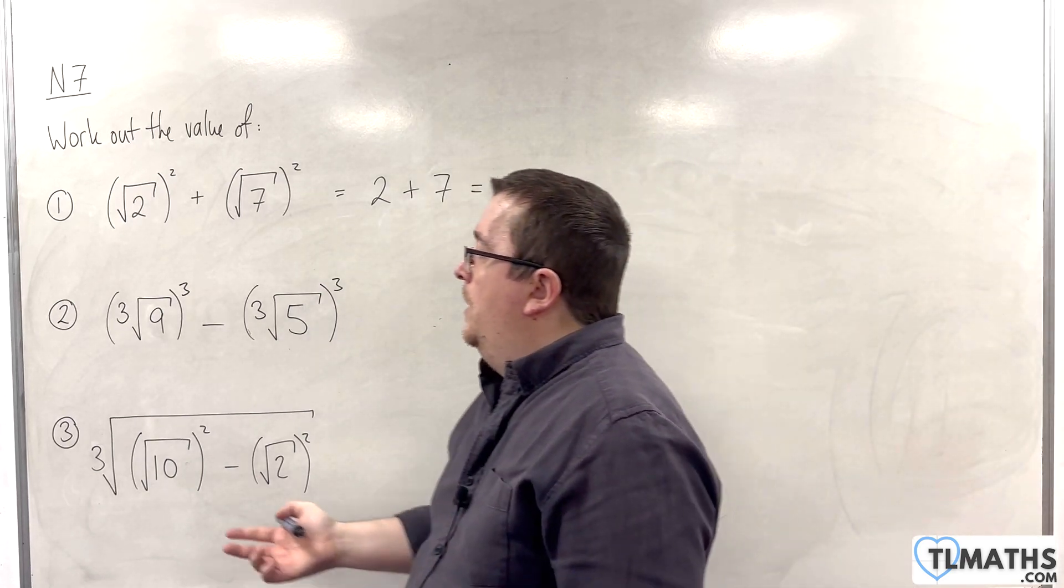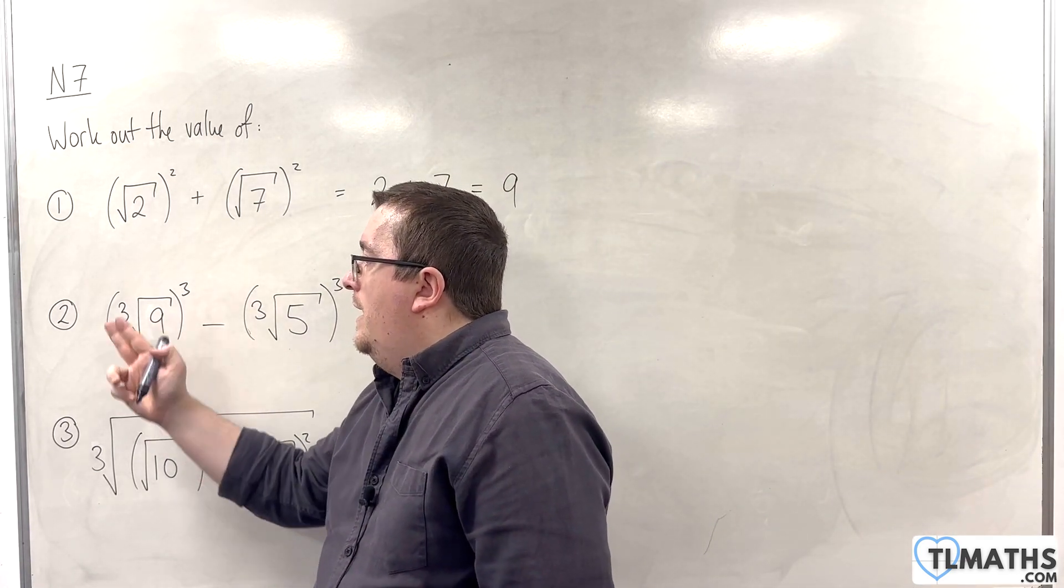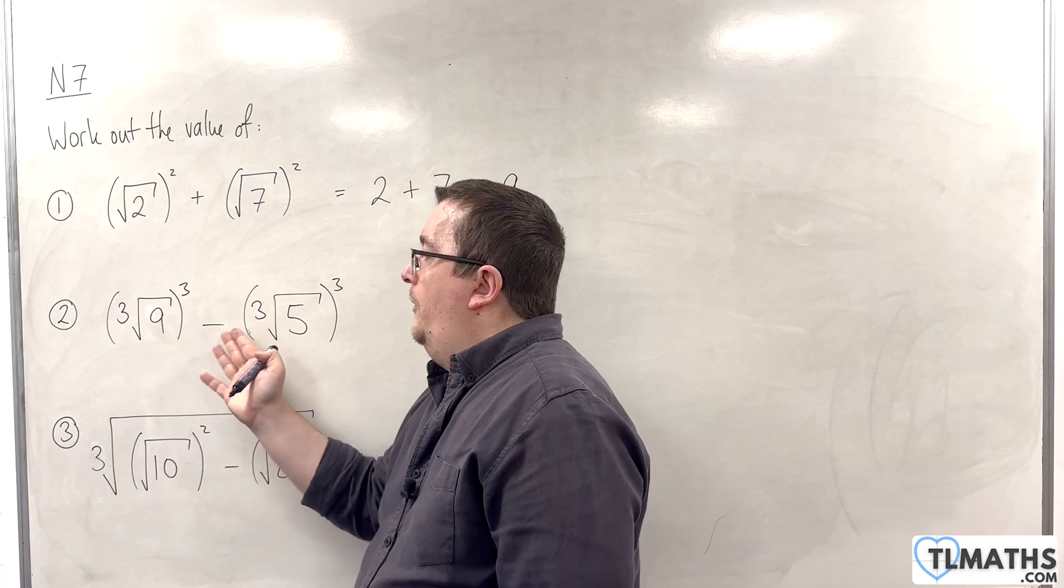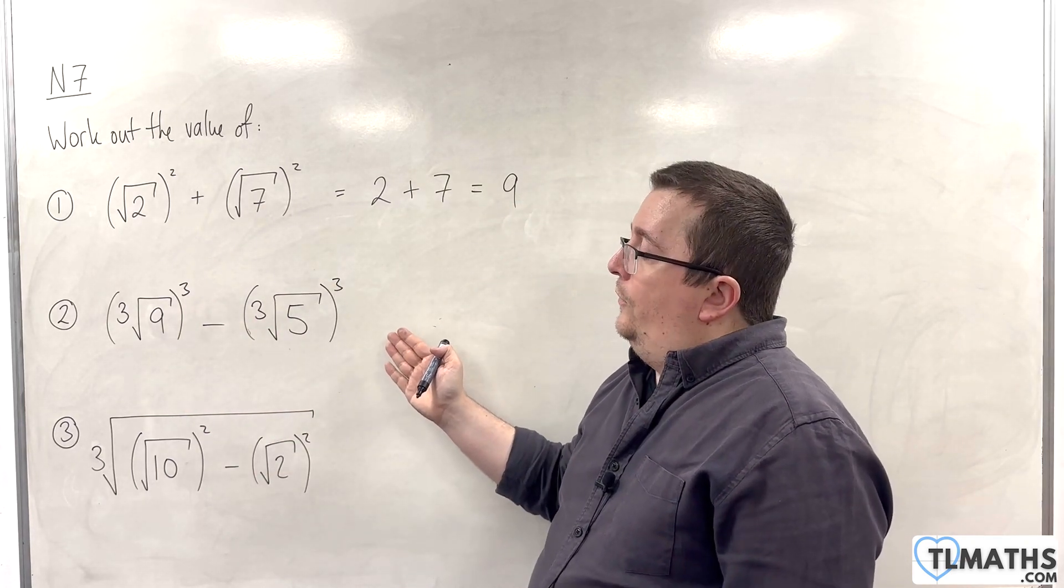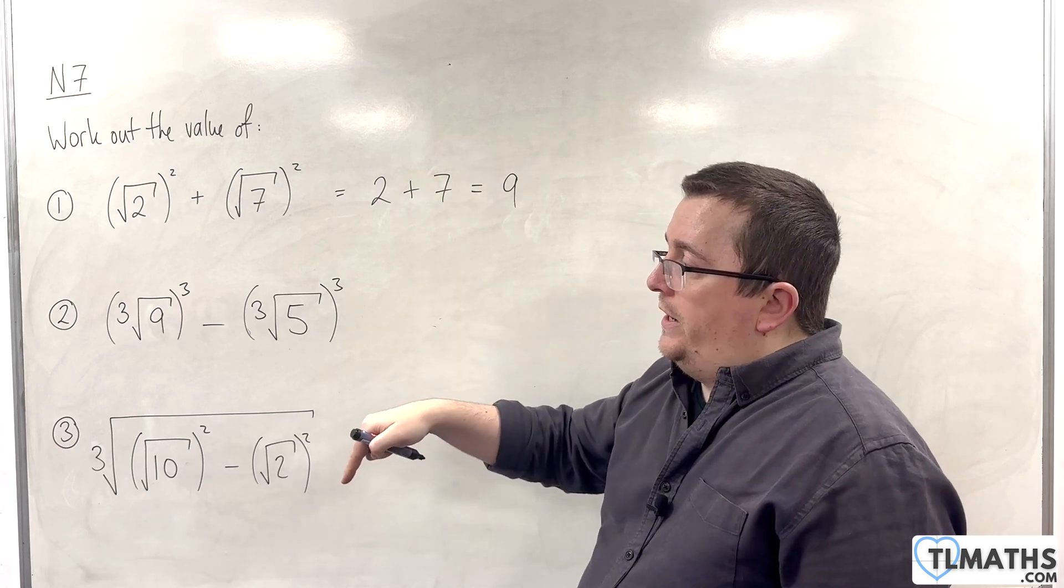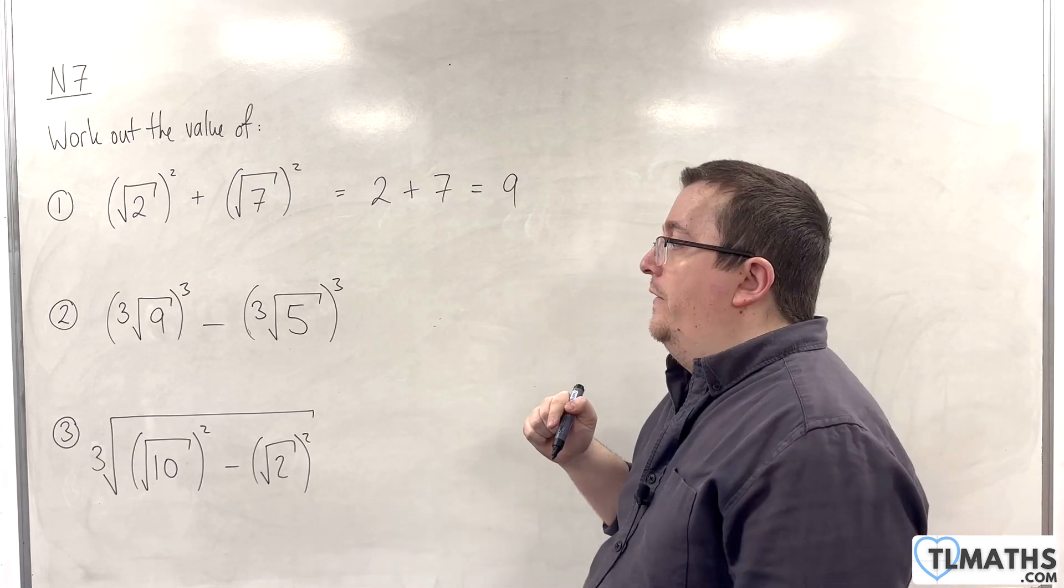Our second example, we've got a cube root of 9 and then we're cubing, take away the cube root of 5, which we're then cubing. So, cube rooting and cubing are inverse processes of one another.